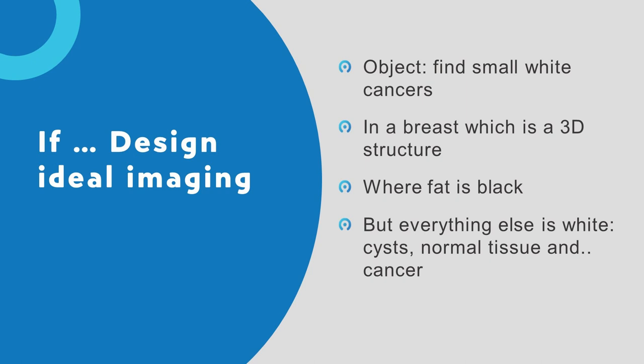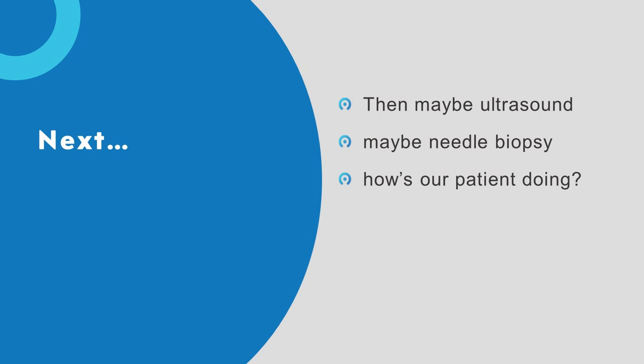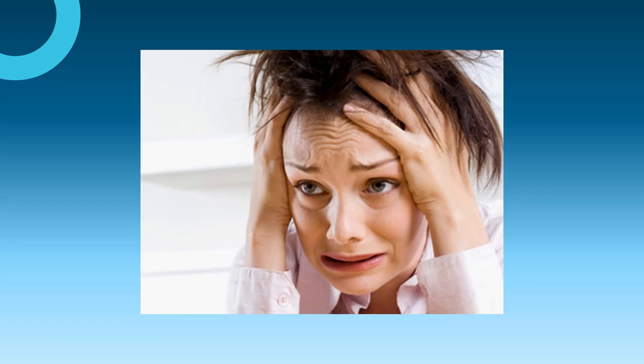We'd have to match up and do at least as well as what we've got currently. What we do now is take that nice 3D structure and compress it into a 2D structure with a lot of pressure. Then we do it more than once. If we see something, we do more spots and mags — all with compression, all extra views. Then this woman maybe gets ultrasound, maybe biopsy. Women will put up with just about everything if we promise — which we can't — to find something.